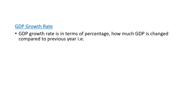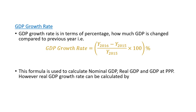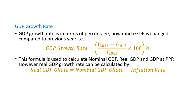The GDP growth rate, measured as a percentage, shows how much GDP has changed compared to the previous year. The formula is used to calculate nominal GDP growth rate, real GDP growth rate, or GDP growth rate when GDP is measured at purchasing power parity. The real GDP growth rate can also be calculated by subtracting the inflation rate from the nominal GDP growth rate.